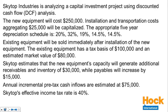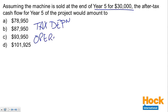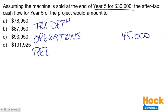Our last question: assuming the machine is sold at the end of year five for $30,000, what is the after-tax cash flow for year five? We know we'll have the tax depreciation shield again, the operating income from the project, the release of working capital at the end of the project, and the sale of the equipment. Operations give us $45,000 — that's unchanged. The tax depreciation shield will be different because year five uses a different depreciation percentage. We also know the working capital will be released at the end of this project.